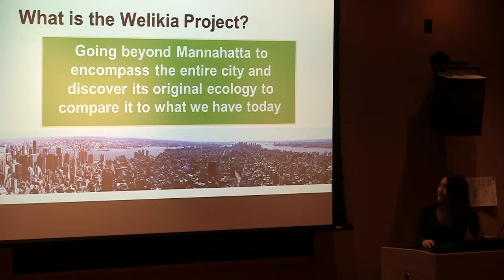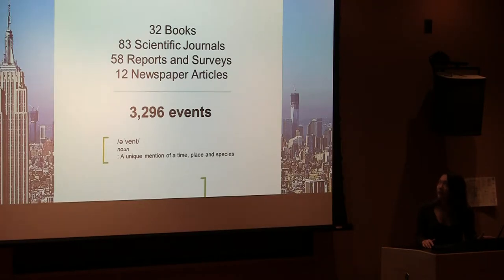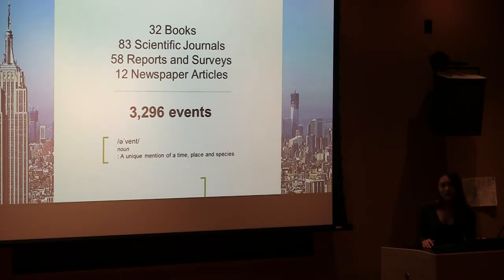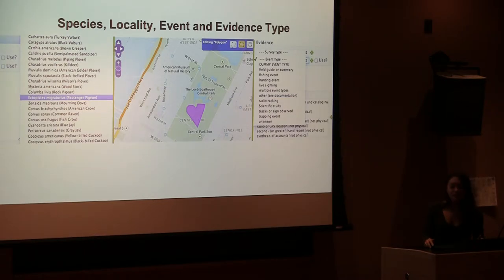This semester we set out to create a comprehensive database cataloguing all wildlife observed in New York City. We did this by reading through peer-reviewed published literature — books, scientific journals, articles, reports, maps, and surveys — to compile a total of 3,300 events. An event is a unique observation of a specific species at a specific time and place. Every event was entered into a web-enabled PostgreSQL database where each team member could contribute, specifying the species, locality using a geo tool, and the evidence, event, and survey types.